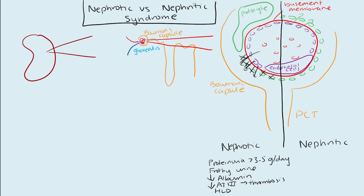On the other hand, for nephritic syndrome, what happens is that it's basically mediated by immune complexes. There are various different immune complexes at play, and they attack basically different parts — the basement membrane, the podocytes, the endothelial cells. This causes a ton of inflammation with a huge recruitment of white blood cells coming into the area and destruction of the membrane, which allows a lot of different things to leak out, including red blood cells.